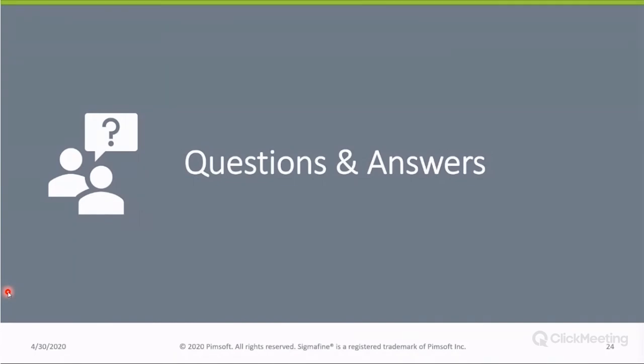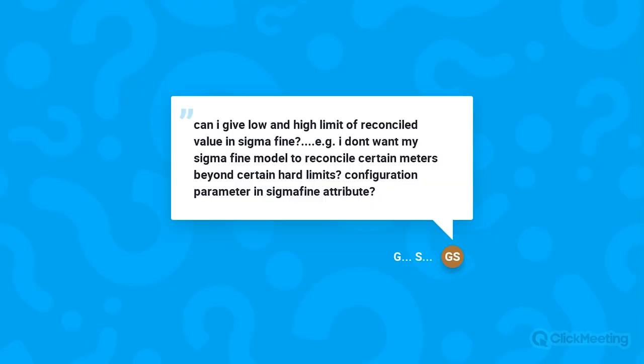Thanks, Gabriele. We have a few questions. First question: can I give low and high limits of reconciled values in Sigma Fine? For example, I don't want my Sigma Fine model to reconcile certain meters beyond certain hard limits — a configuration parameter and Sigma Fine attribute. Yes, we can customize the model according to your request. Of course, we have to do an analysis of the situation with our consultants in order to optimize the configuration. In Sigma Fine, we have a statistical index that will help us optimize and get the best result of the analysis.